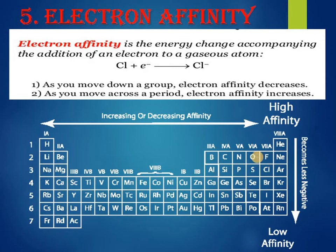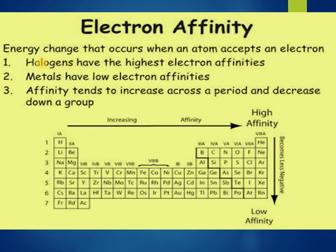Electron affinity is the energy change upon addition of an electron to a gaseous atom. As we move down a group electron affinity decreases, and as we move across a period electron affinity increases. Halogens have the highest electron affinity. Metals have low electron affinity. The trend for electron affinity is the same as for ionization enthalpy and electronegativity, though the properties themselves are different.